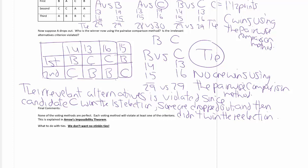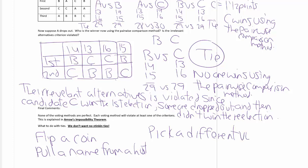Final comments. None of the voting methods are perfect. Each voting method will violate at least one of the criterions. This is explained in what is called Arrow's impossibility theorem. What to do with ties. We don't want no stinking ties. What are some options? Flip a coin. Pull a name from a hat. Or more importantly, maybe pick a different voting method. Those are some options in case you have a tie in a particular election.